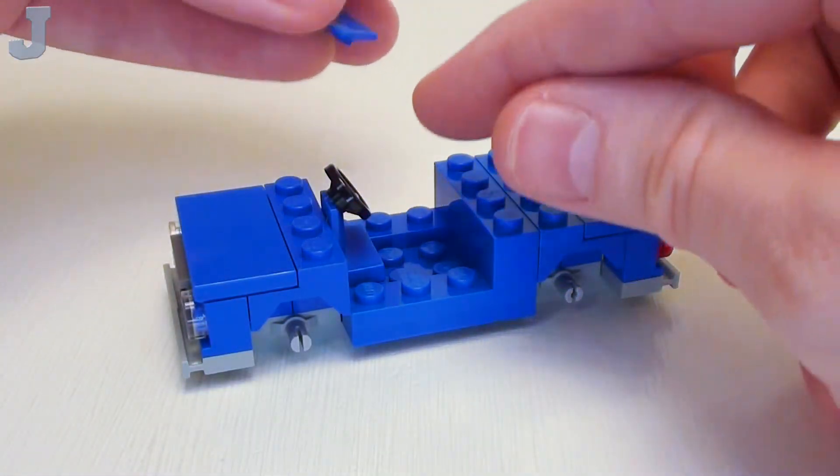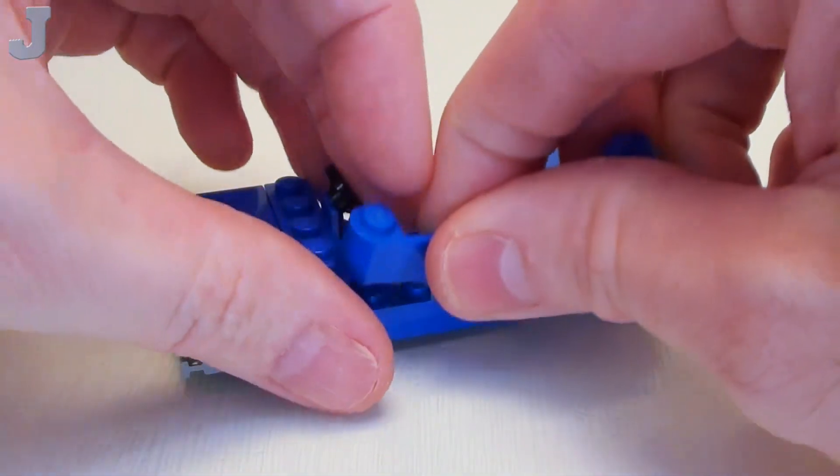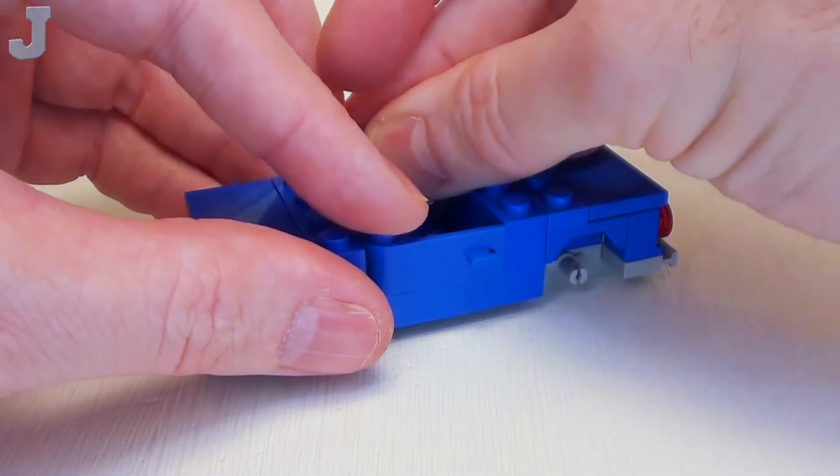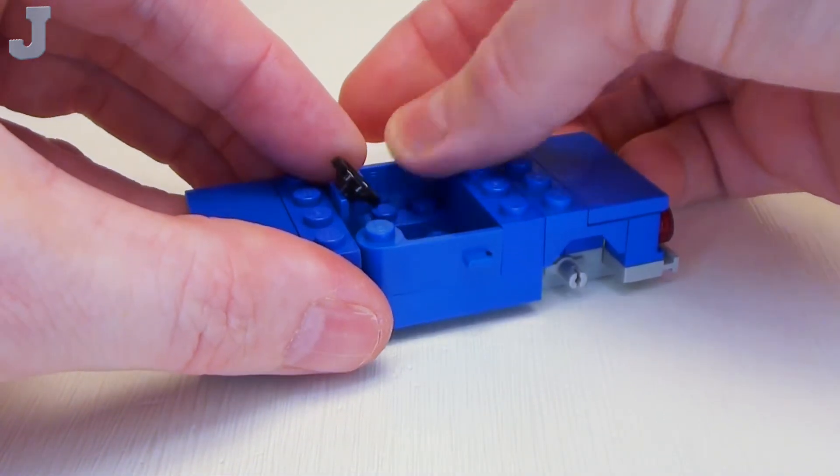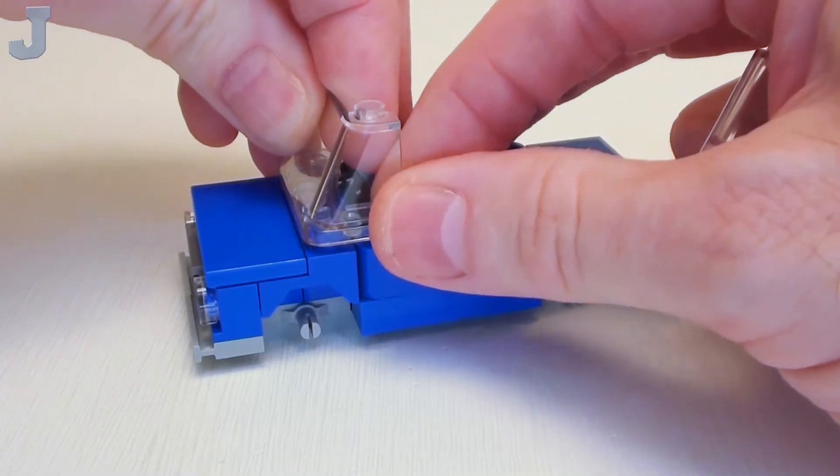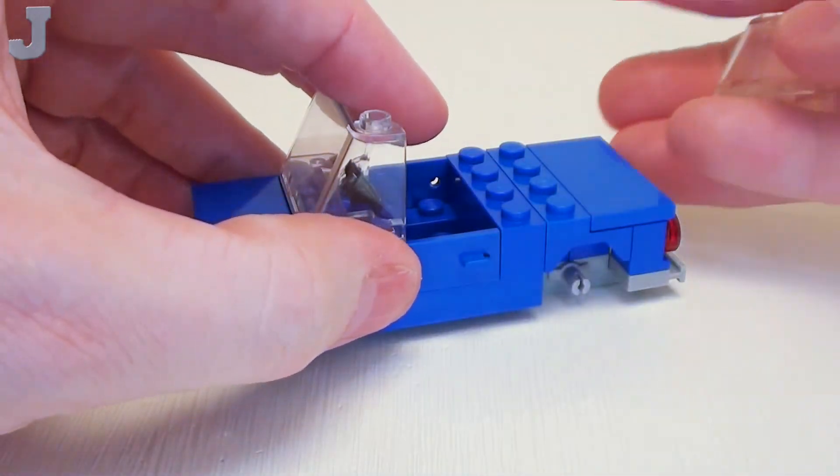Let's take a set of 1 by 3 by 1 left-hand and right-hand doors. Place these right through the 1 by 3 opening, and let's lock all that together with a pair of 2 by 4 by 2 windscreens.